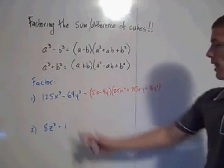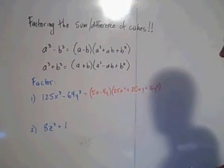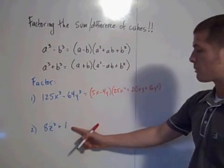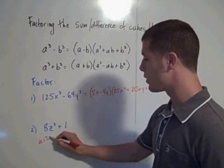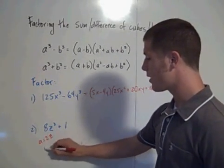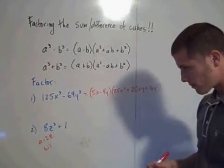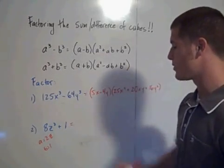And this is the factored form of that. Here we have the sum of cubes. Our a value is 2z, and our b value is 1.